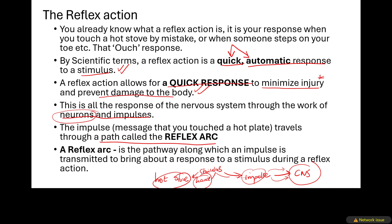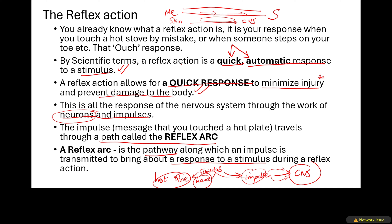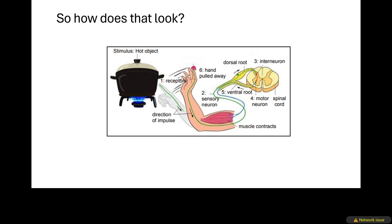A reflex arc is the path that the impulse takes so that it reaches the central nervous system from the part of your body feeling the stimulus. By definition, a reflex arc is a pathway along which an impulse is transmitted to bring about a response to a stimulus during a reflex action. Just like a message moves through WhatsApp between two people, this message comes from the skin feeling heat and travels through this path to the central nervous system — that path is called a reflex arc.